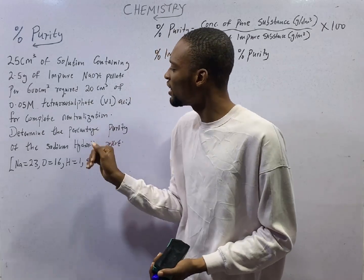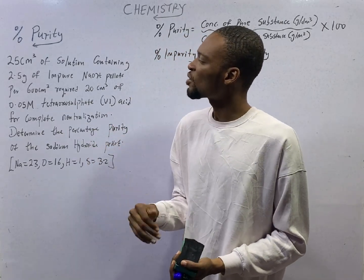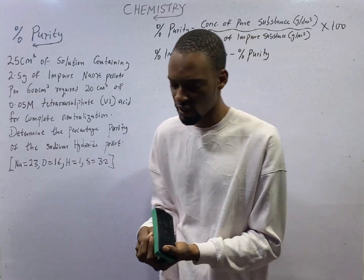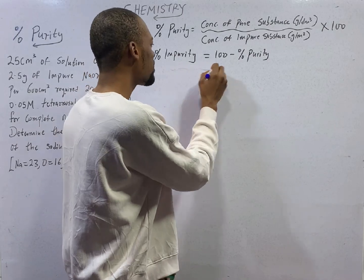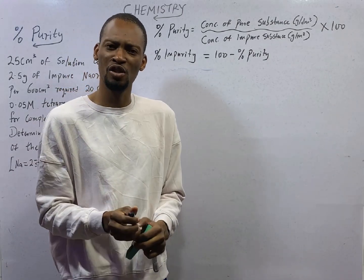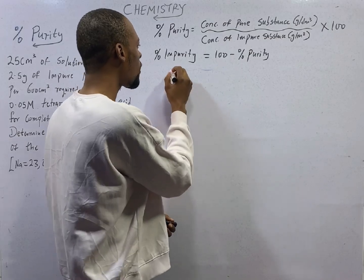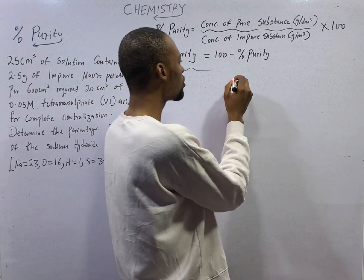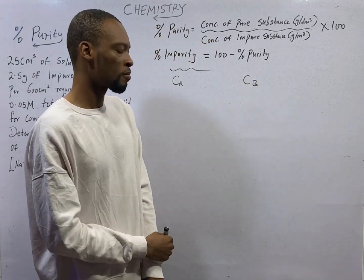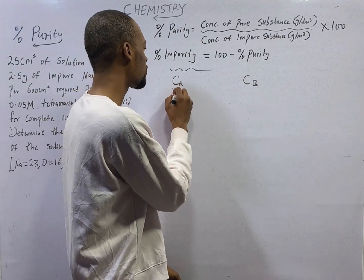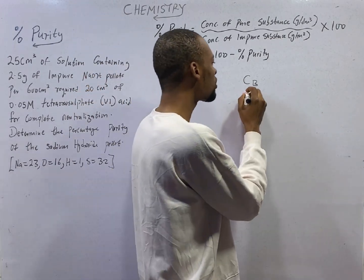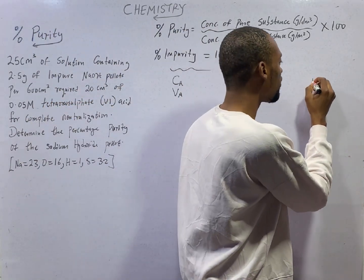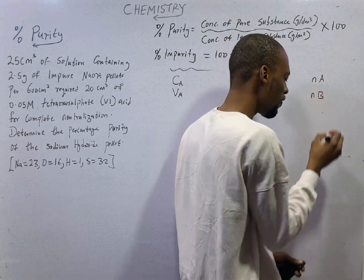When you hear 'calculate percentage purity,' something should tell you that we are dealing with acid-base reaction. In acid-base reaction, there are things that must be available: we must know the concentration of the acid, we must also know the concentration of the base, we must know the volume of acid, we must know the volume of base, and we must know the number of moles of acid and the number of moles of base.